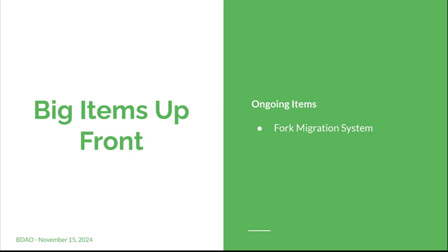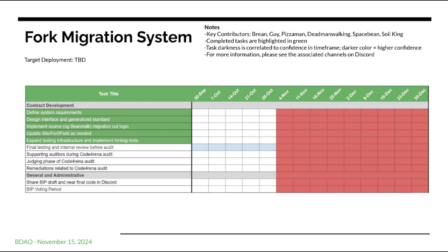Probably the biggest item — really the only major item on the agenda for today — is the fork migration system. You can see in the Gantt chart that the fork migration system has moved to TBD, essentially being put on hold for now. This is primarily due to how the price of Bean is affecting the ability to pay the contractors that would be performing it, or pay the group that would be facilitating the audit. I'll turn it over to Guy to add some more information.